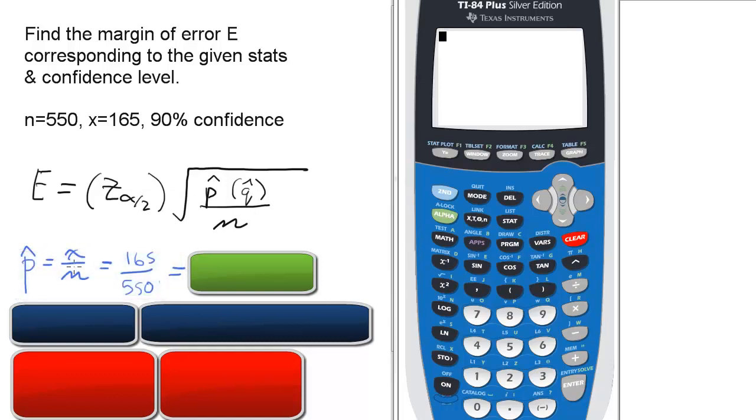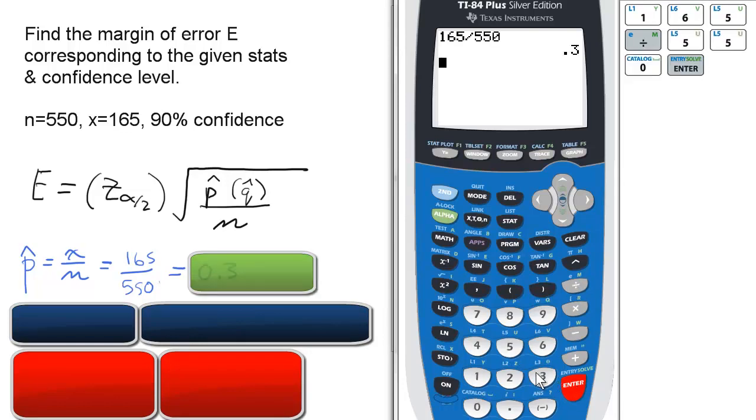So P hat is X over N, which is 165 over 550. So 165 divided by 550, and enter. And that's 0.3.